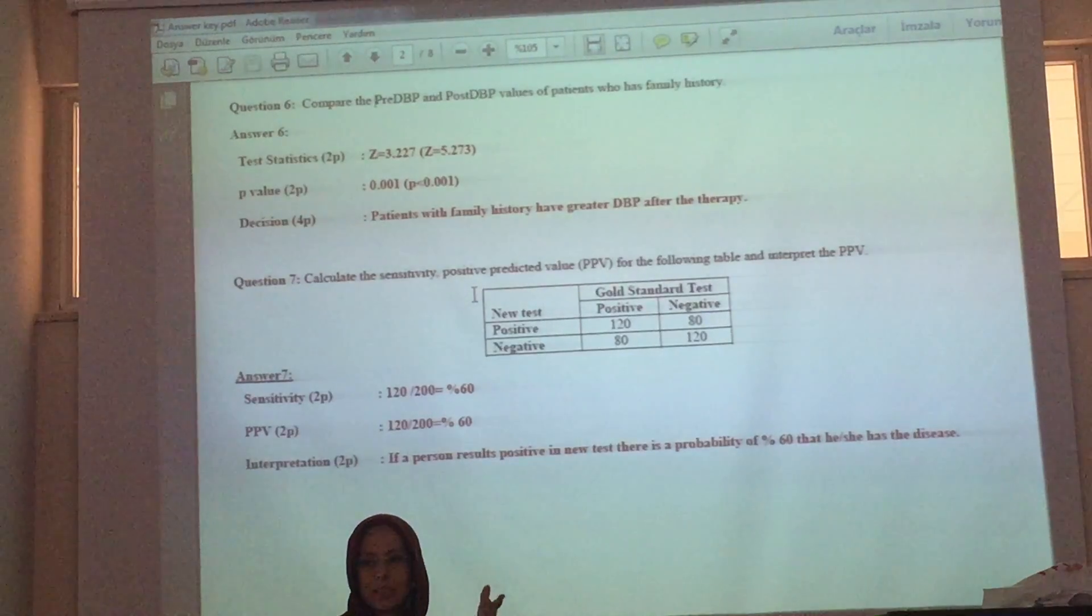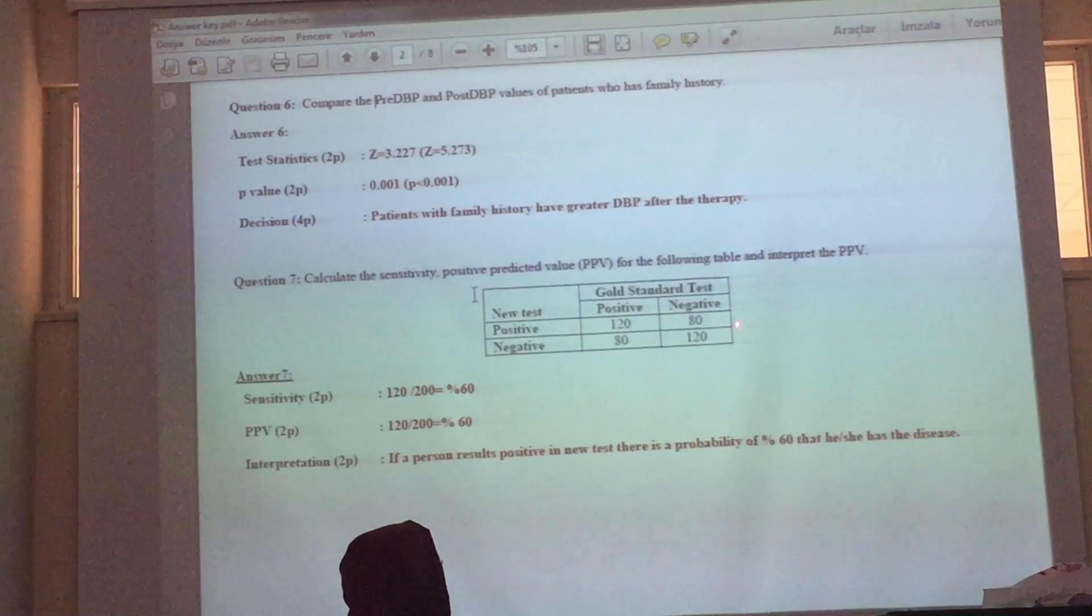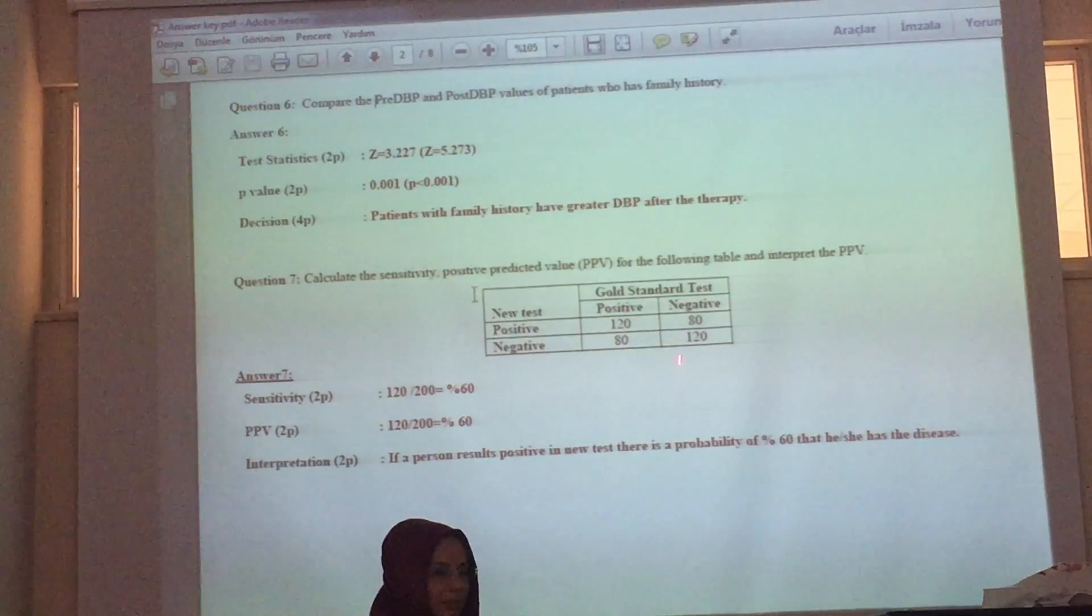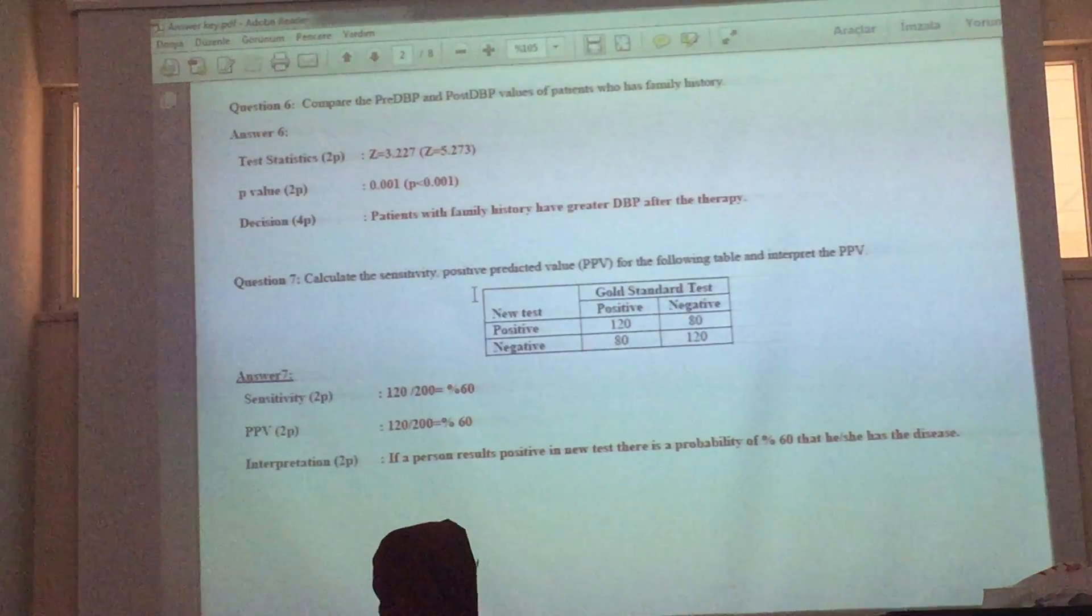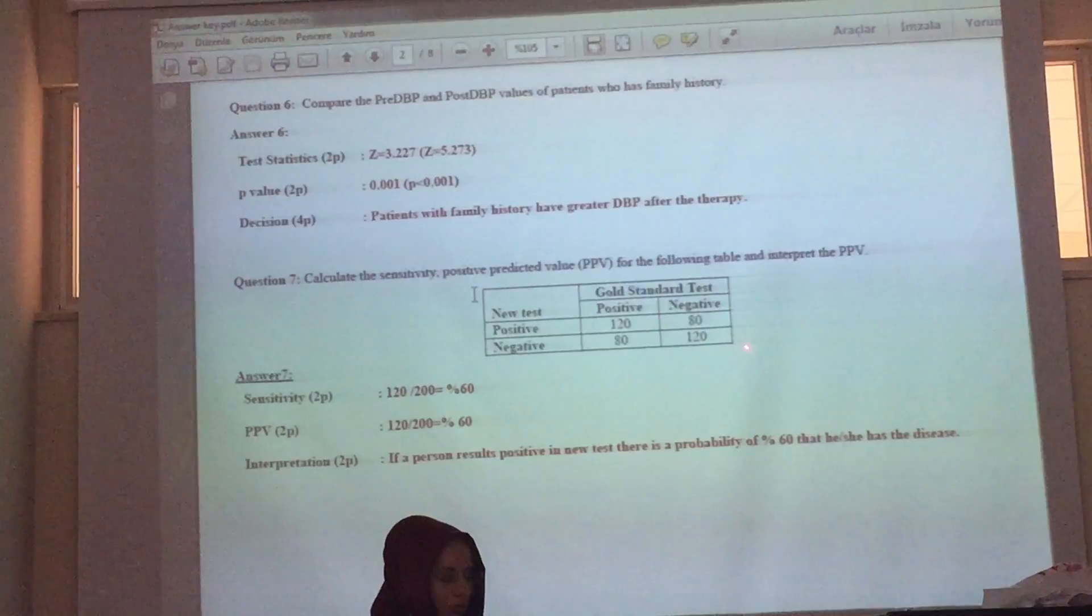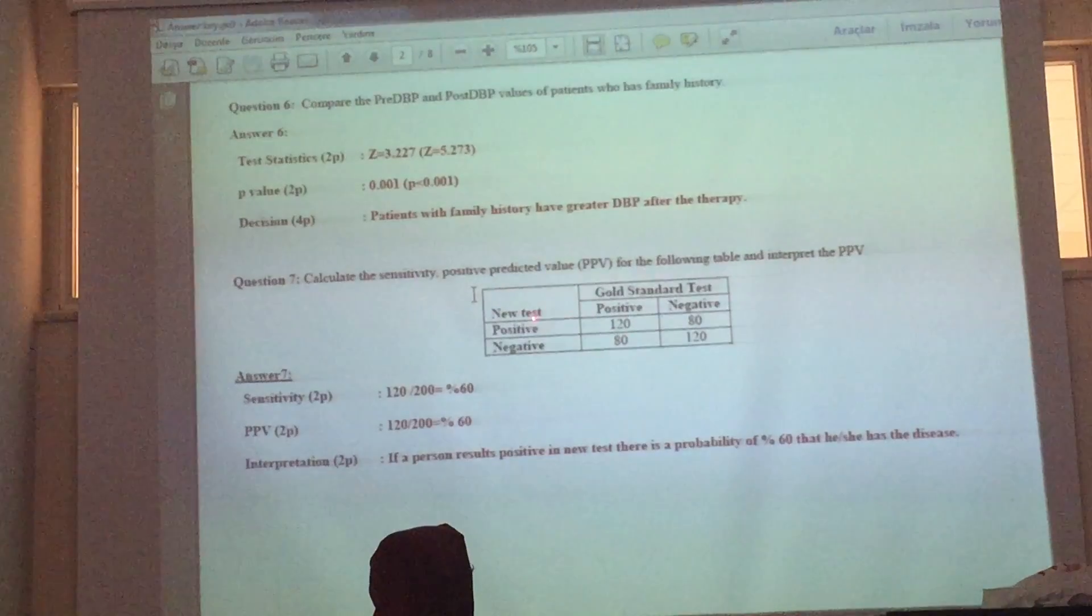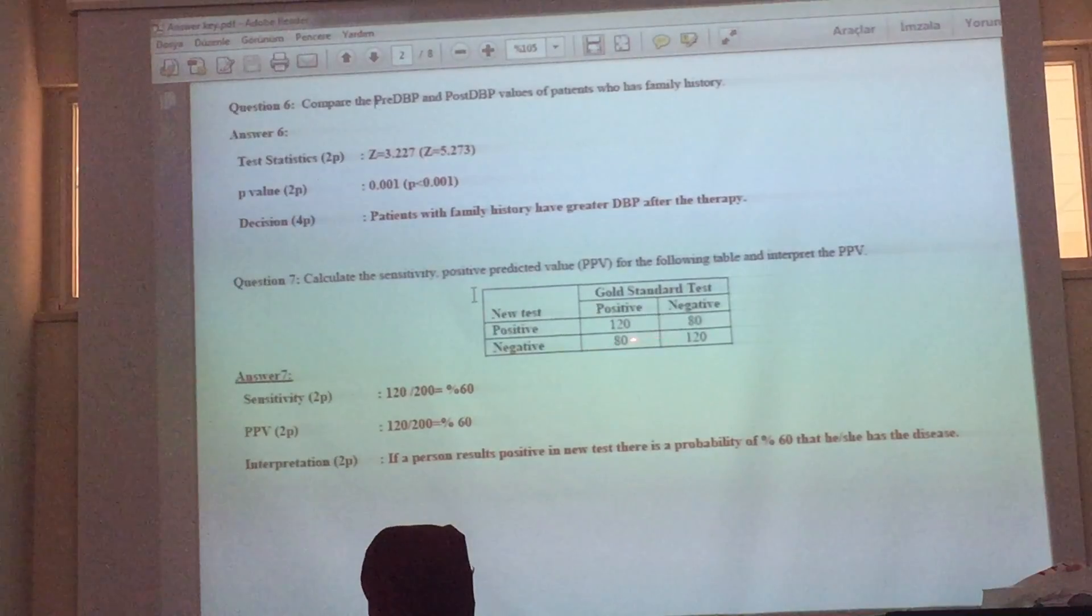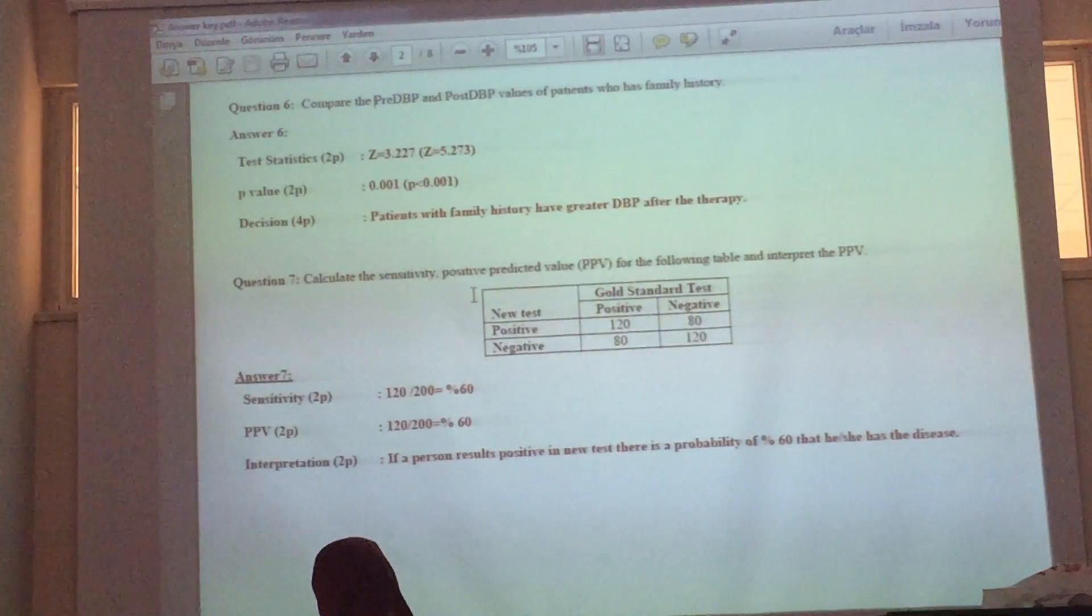Gold standard is that, yeah, if you plan to test that he or she has cancer, then yes, he or she is diseased. So gold standard means these 200 people are patients. This means these 200 people are healthy.